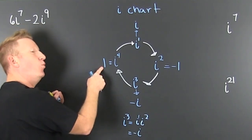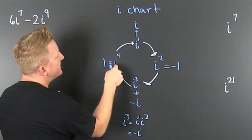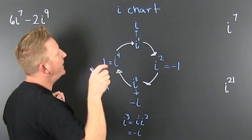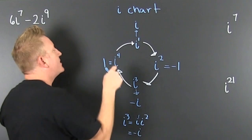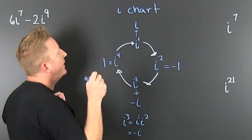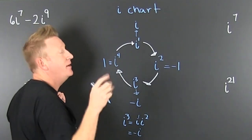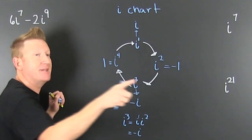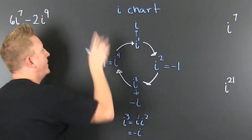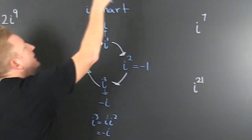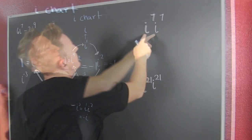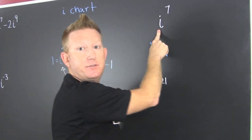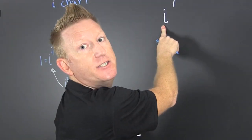i to the fourth is one. Why? Because it's i squared times i squared, which is going to give you minus one times minus one, which is one. Fun — let's go and use the i chart.